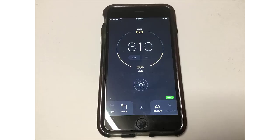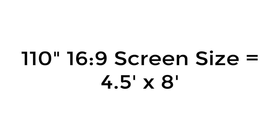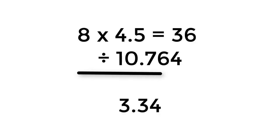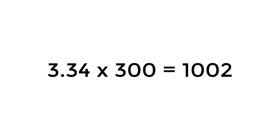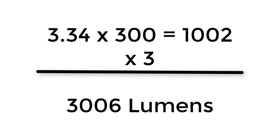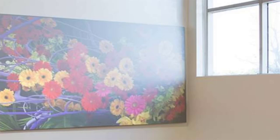Let's look at an example. I've measured the light at the screen location at 300 lux. My 110-inch screen is 4.5 feet by 8 feet. So I multiply the width by the height to get 36, and divide by 10.764 to get the screen area in square meters, which comes out to 3.34. I multiply that area by the lux reading of 300 and get 1002. I then multiply 1002 by 3 to get the projector that I need, which roughly is a 3000 lumens projector. If direct light from the windows or the fixtures are going to hit the screen, cross projection off of your list.